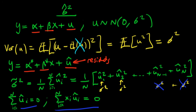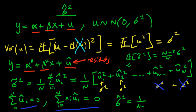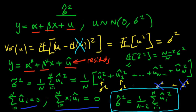So in fact if we were to take the expectation of sigma tilde squared, it would in fact be the expectation of sigma tilde squared is equal to n minus two over n times sigma squared. So it would in fact be a biased estimate of sigma squared, and it would actually underestimate sigma squared. So what do we do? Well, instead of dividing through by n, we form an estimator which we're going to call sigma hat squared, which is equal to one over n minus two times the sum of i equals 1 to n of u hat i squared. And that is what we define as our unbiased estimator for the population variance sigma squared.